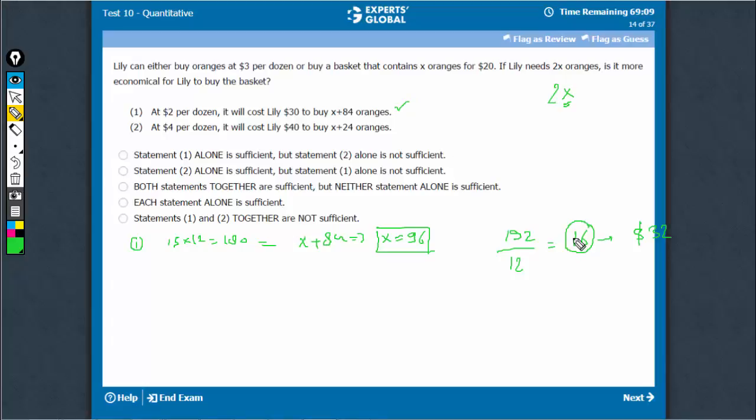Now, once I have got the value of X—I am sorry, $2 is if it were $2, but practically, she is going to get $3. So, this is going to cost her $48. And 2 baskets will cost her $40. So, the baskets are going to be economical. So, answer is yes, statement 1 is sufficient.